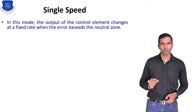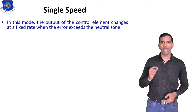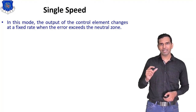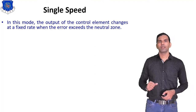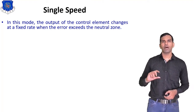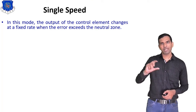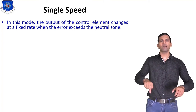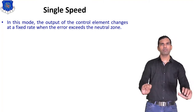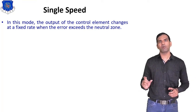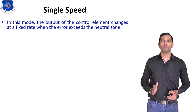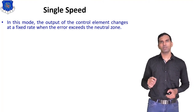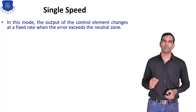In single speed control mode, the output of the control element changes at a fixed rate when the error exceeds the neutral zone. That means the output changes, but its changing speed remains fixed — like driving a vehicle at a constant speed of 60 km/h.